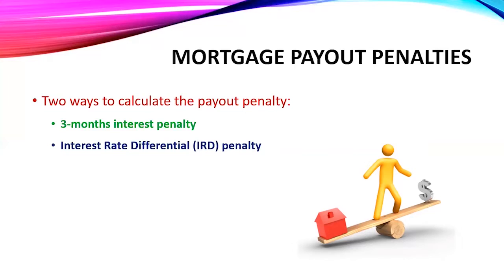The interest rate differential penalty is where they will look at what the interest rate was when somebody got the mortgage and what today's interest rate is, and they'll charge the difference for the remaining part of the term. In this video, we'll take a look at both of these penalties and how we calculate them.